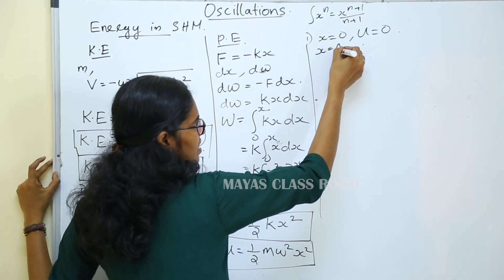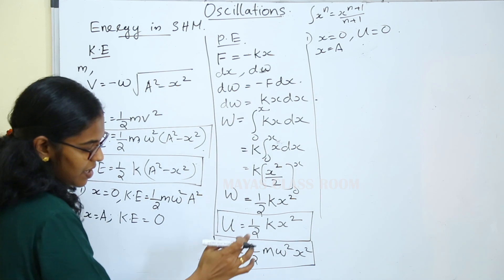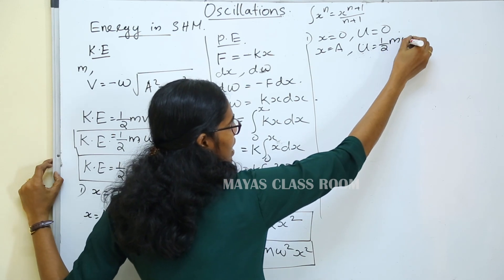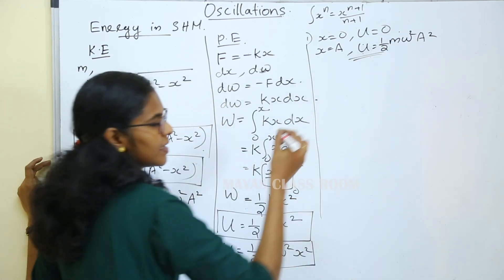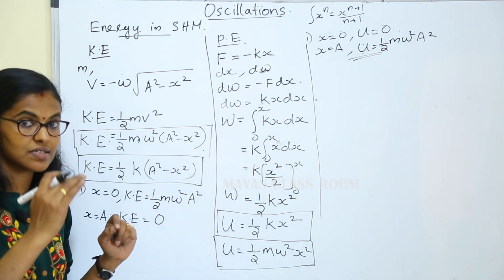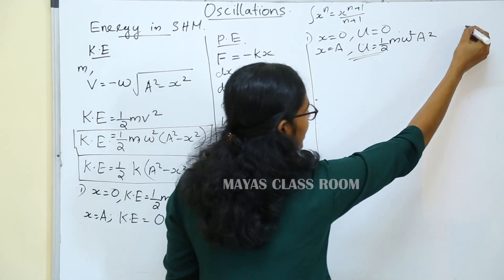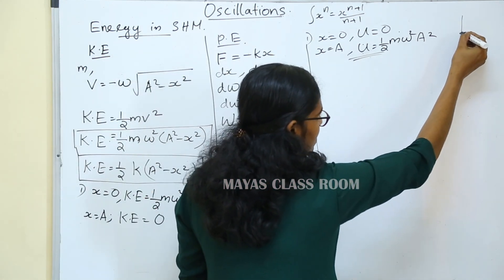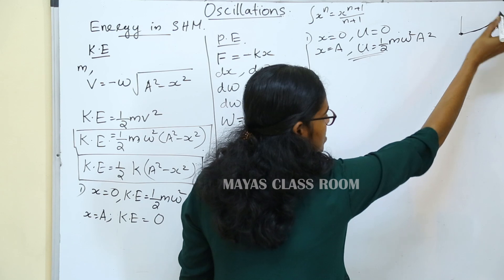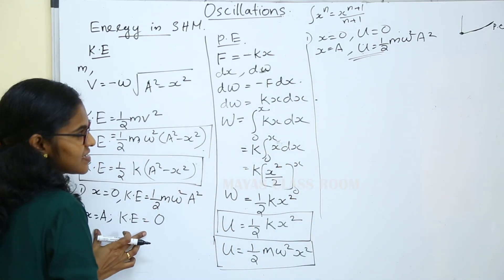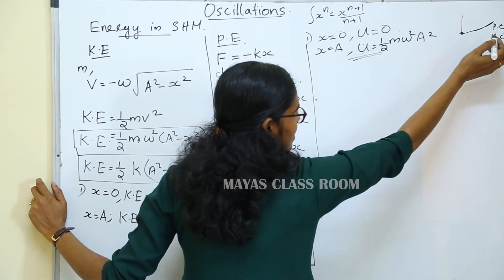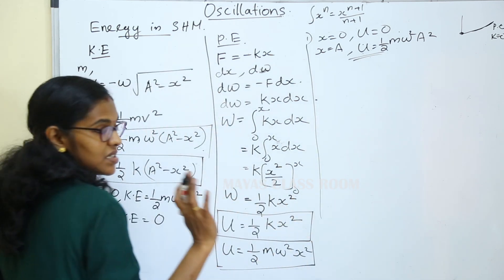In the extreme position, x is equal to a. Then the equation gives U equal to half m omega squared into a squared, which is the maximum potential energy. At the extreme position, the potential energy is maximum and the kinetic energy is zero. In the mean position, the potential energy is zero and the kinetic energy is maximum.